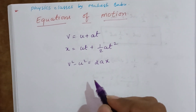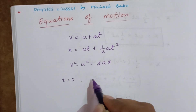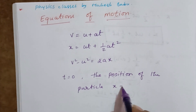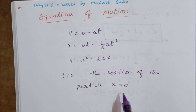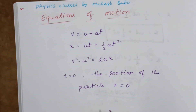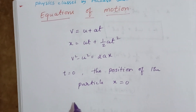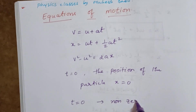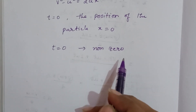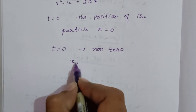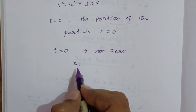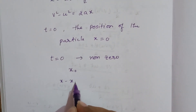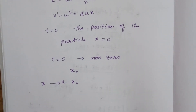These three equations were derived by assuming that at T = 0, the position of the particle X = 0. But for a more general case, we take the position coordinate at T = 0 to be non-zero. So we call that X₀. At T = 0, the position of the coordinate is X₀. In the given equations, X is replaced with X minus X₀.